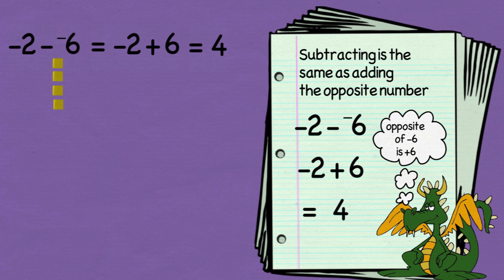While I like using the tiles to see what's going on, it's not practical with large numbers. So usually we use the adding opposite property so we can do the problem on paper quickly and easily. Now it's your turn to try solving some problems.